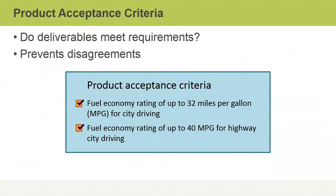For example, a product may meet one set of standards for durability but not another. If it isn't clear which standards must be used, the product could fail to satisfy some stakeholders.